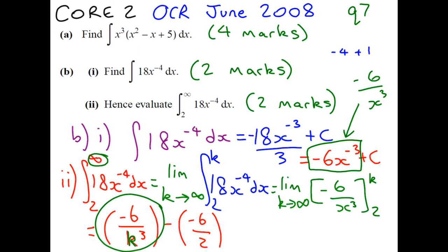...it's going to get smaller and smaller. And in maths, we say it gets so small, it's actually going to tend to 0. So it's effectively going to disappear. Which means for our answer, we get minus minus 6 over 2.